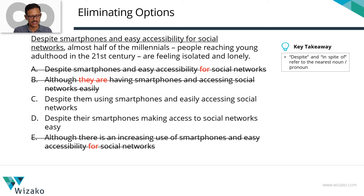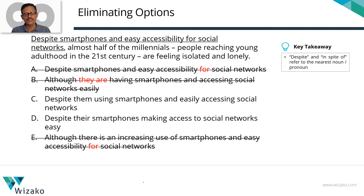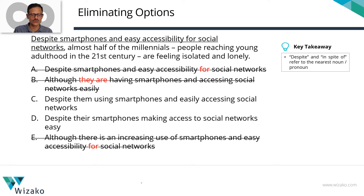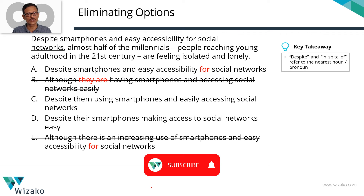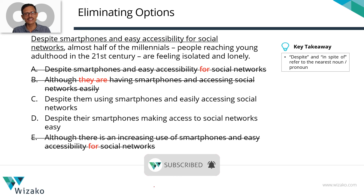If we remove 'them,' we get 'despite using' — and here 'using' is not a verb; it comes in gerund form, as a noun. Ideally, I would say 'despite their usage of smartphones.' Another correct alternative is 'despite the fact that they use smartphones' — here 'despite' refers to the fact of using smartphones, not to millennials. That would be correct usage. Since 'them' should not be there, and it is in choice C, Choice C is incorrect.